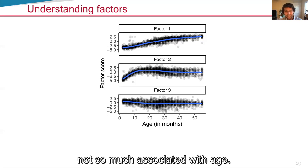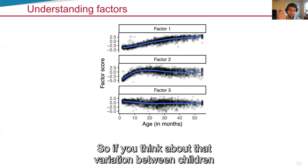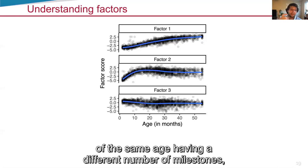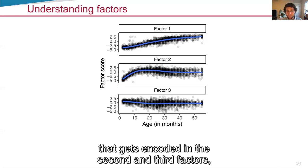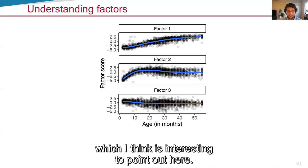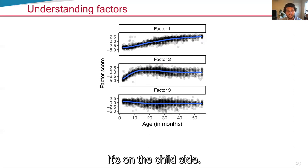The second and the third factor is not so much associated with age. So if you think about that variation between children of the same age having a different number of milestones, that gets encoded in these second and third factors, which I think is interesting to point out here. That's on the child side.